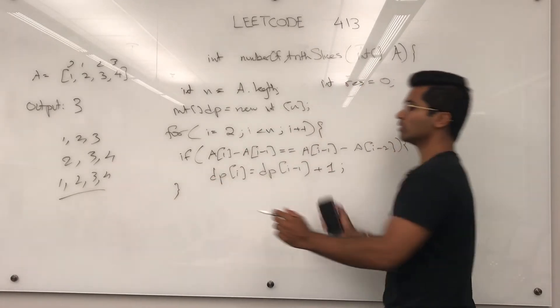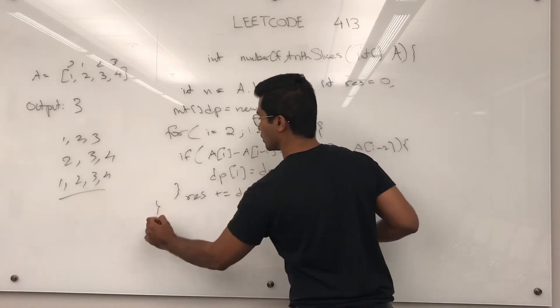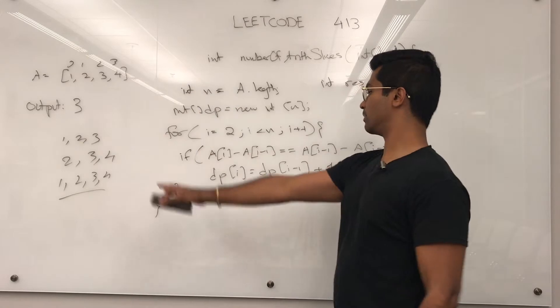And because we want the total, we're just going to increment res by DP of i, and then we return res.